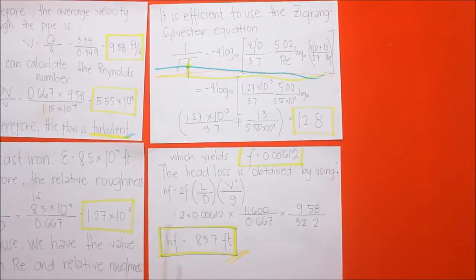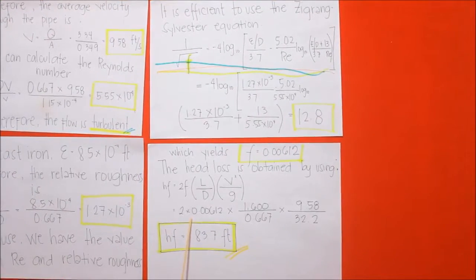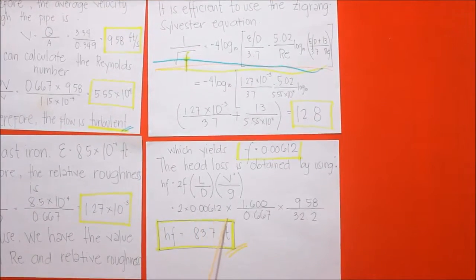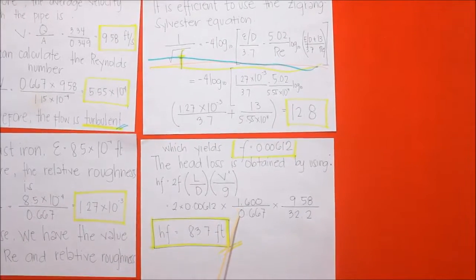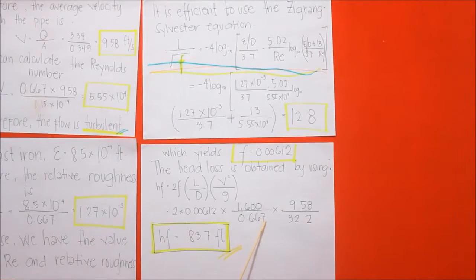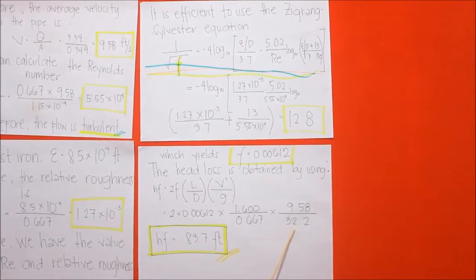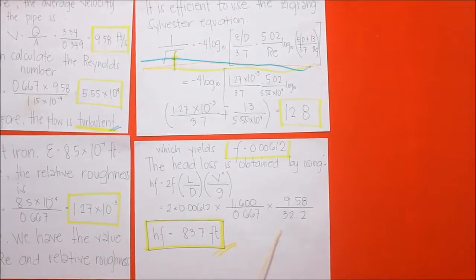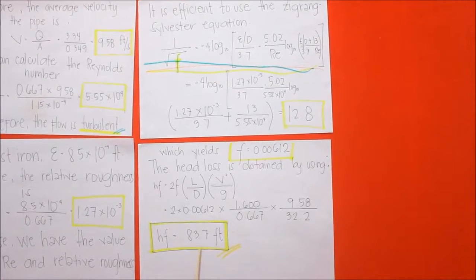Plug in the given to the formula: 2 times 0.00612 times the length of 1.6 over 0.667 times 9.58 over 32.2. We will come up with the answer of 83.7 feet.